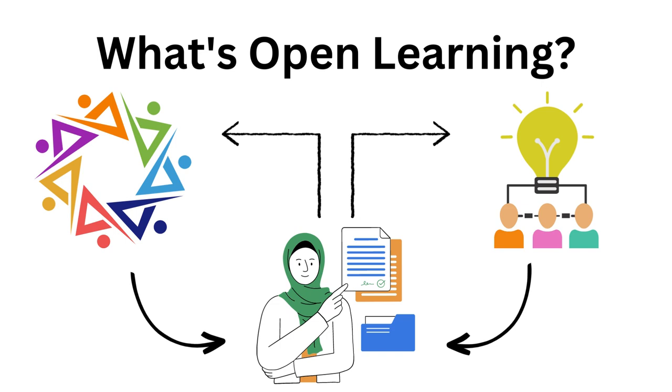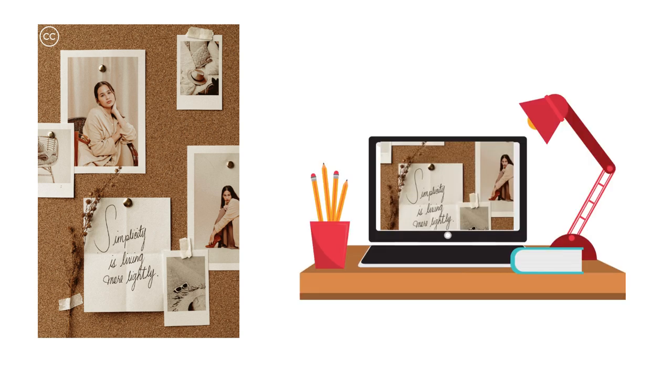For example, by sharing a picture with a Creative Commons license, others can use the image for their own purposes, as long as they align with the Creative Commons license terms and include proper attribution.